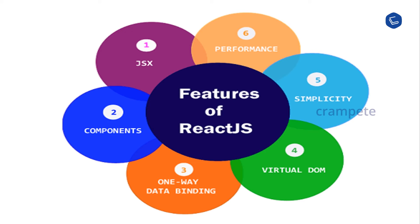Number 2: Components. ReactJS is made up of multiple components and each component has its own logic and controls. Components are independent and reusable bits of code. This component-based approach helps you maintain the code when working on larger projects.